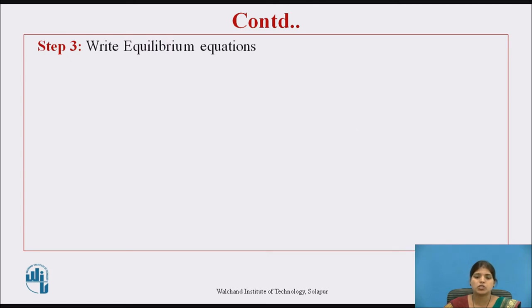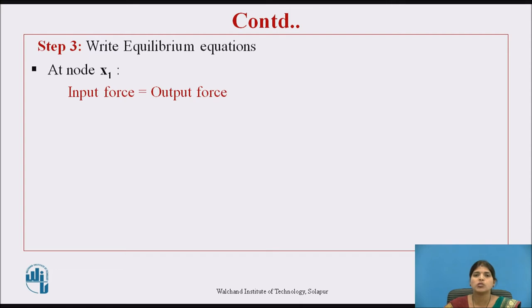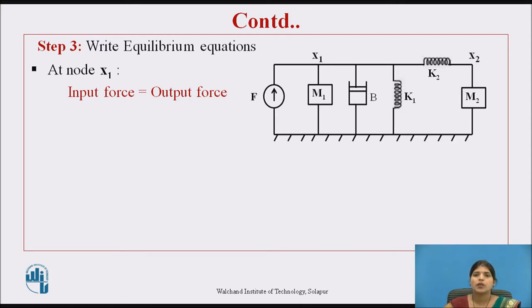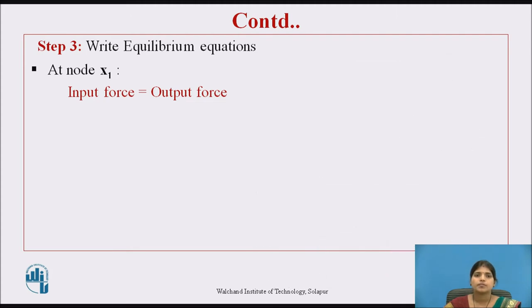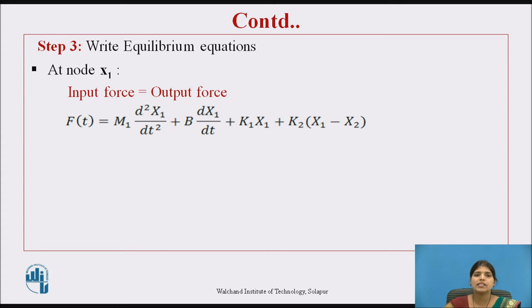Step 3: write equilibrium equations at node X1 and node X2 using input force equals output force. For node X1, input force is F and output force is due to mass M1, B, K1, and K2. For node X2, input force is due to K2 and output force is due to mass M2. The equation at node X1 is: F(t) = M1·(d²X1/dt²) + B·(dX1/dt) + K1·X1 + K2·(X1 − X2).